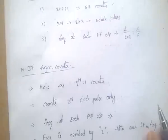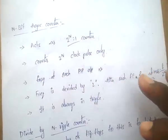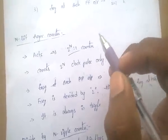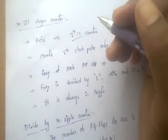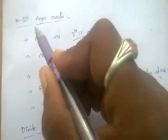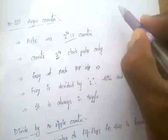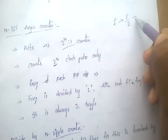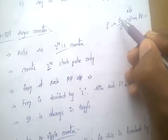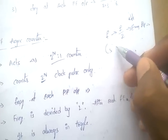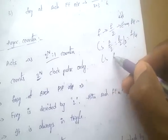Next, the n-bit asynchronous counter — very important. It acts as a 2^n-to-1 counter, counts up to 2^n clock pulses. The frequency is divided by 2 for every flip-flop: after the first flip-flop the output is f/2, after the second it is f/4, after the third it is f/8, and so on.